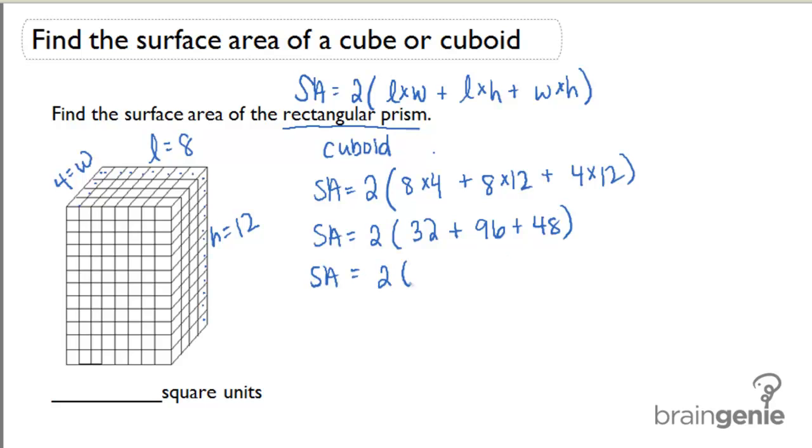So the surface area equals 2 times 176. If I do up that multiplication, I get 352 square units. I can also write that as units squared.